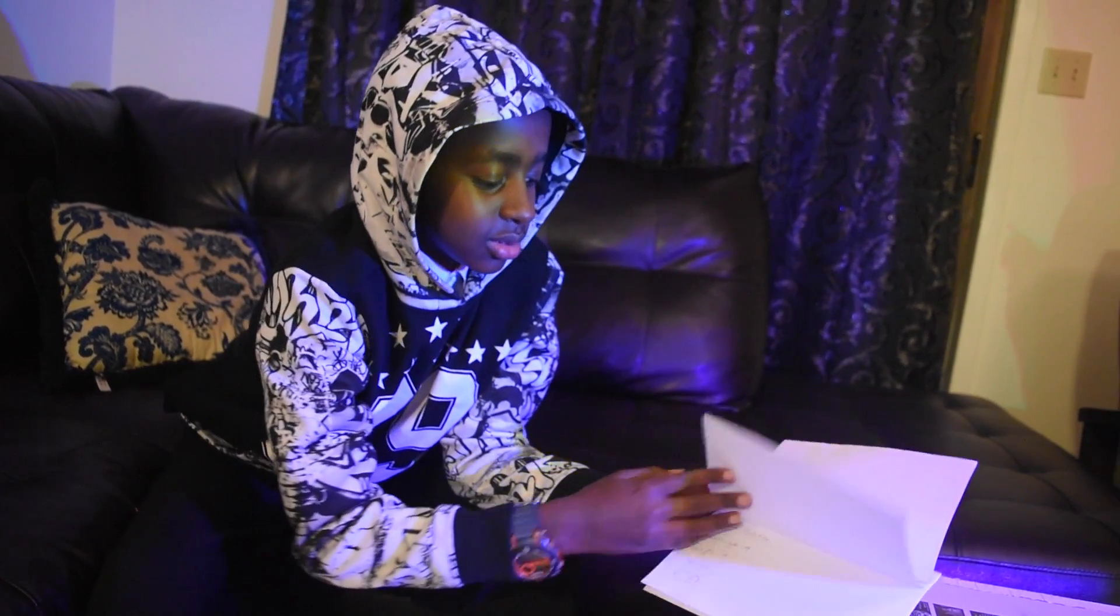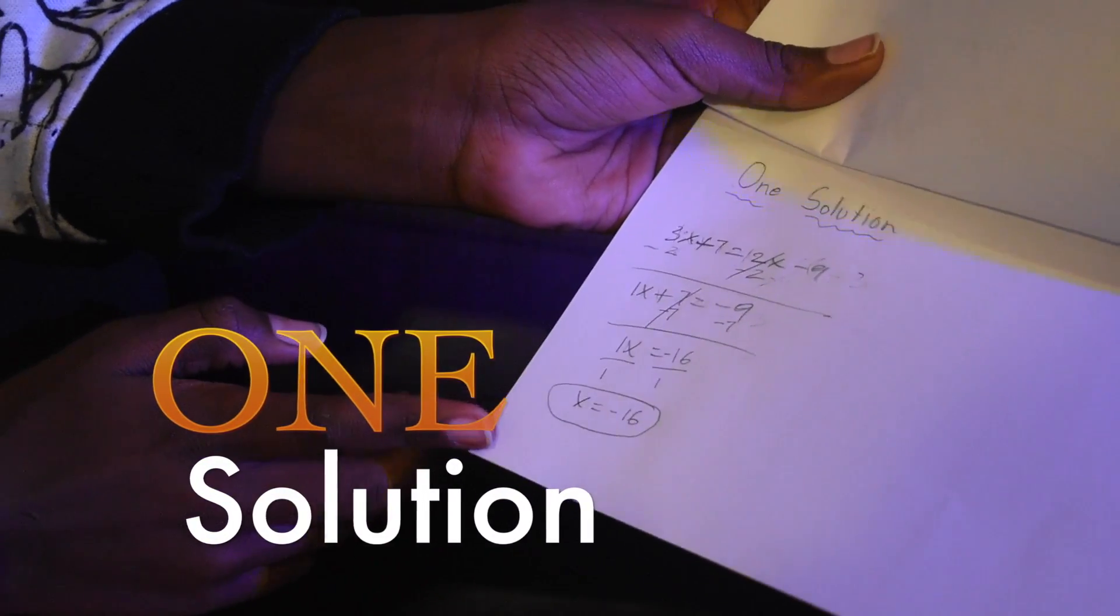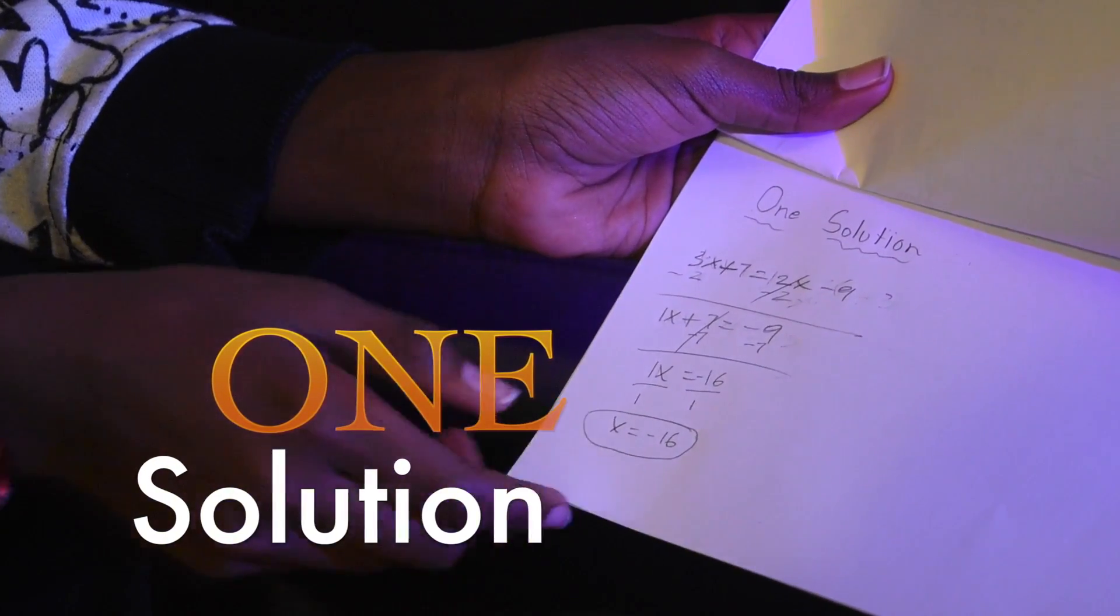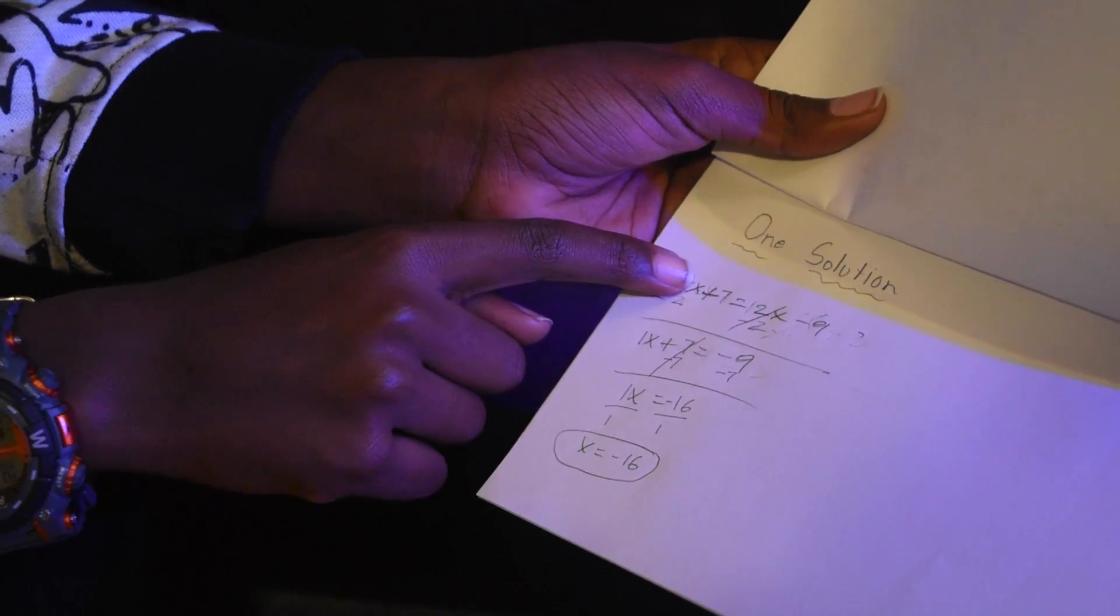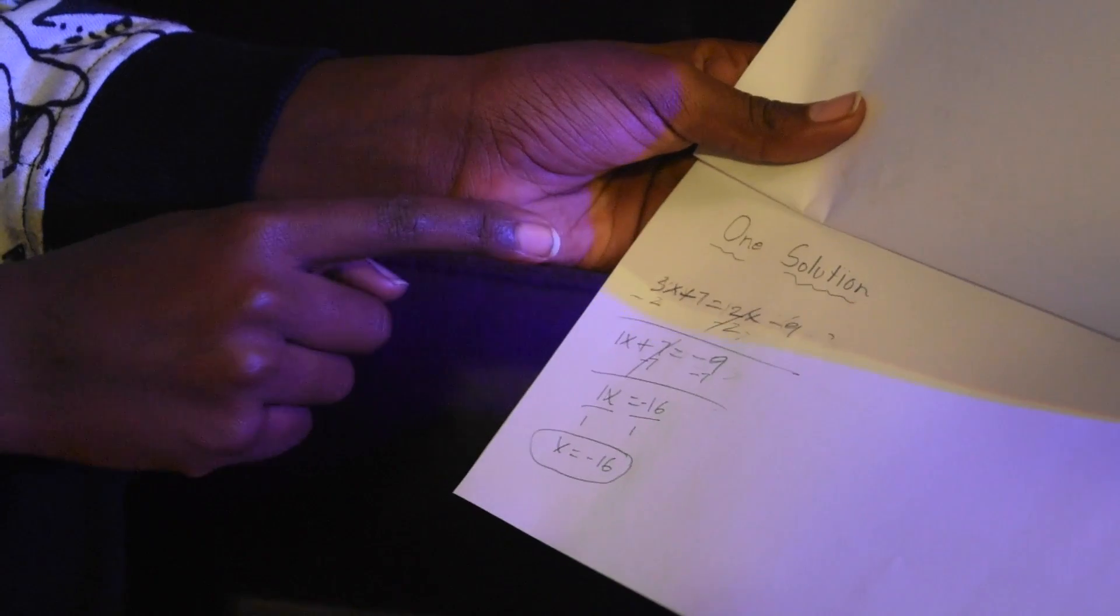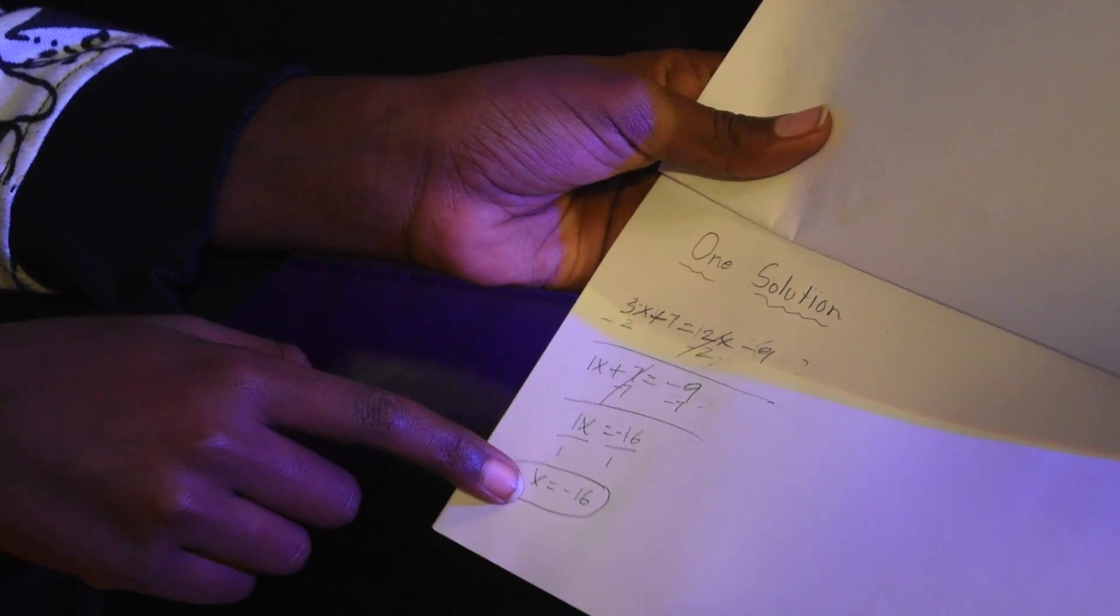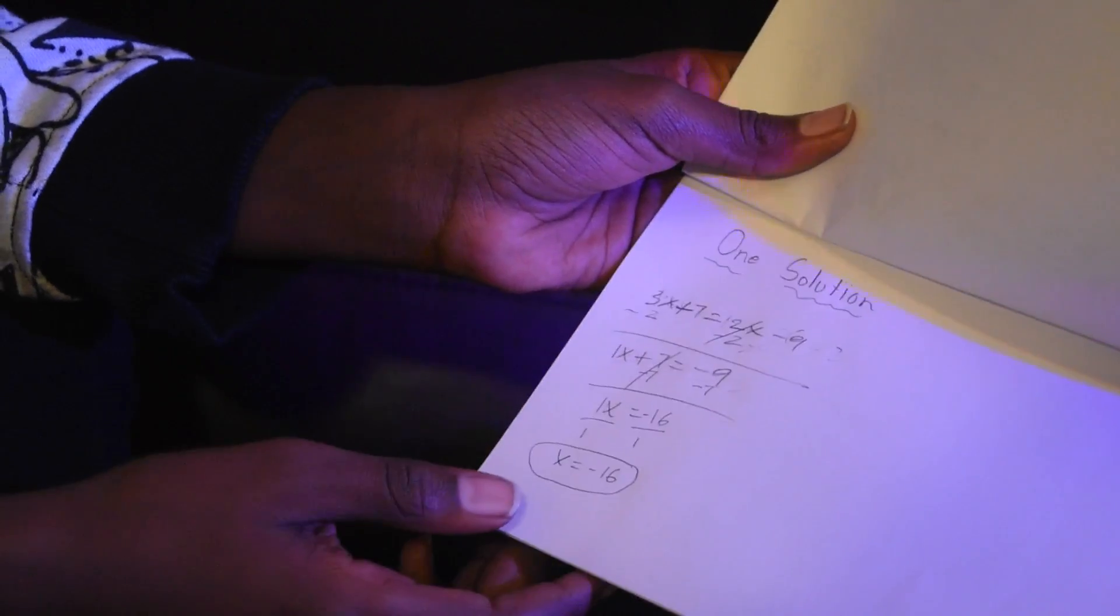The last type of equation is one solution. One solution is when you have a lot of numbers and when you solve them you get one number left, like 3x plus 7 equals 12x minus 9. You solve that and at the end you finally get that x equals negative 16. That's one solution.